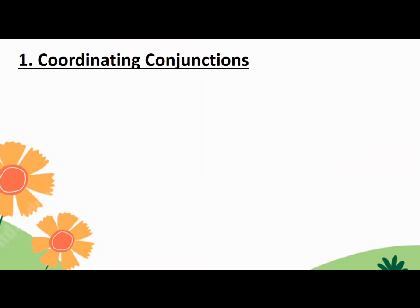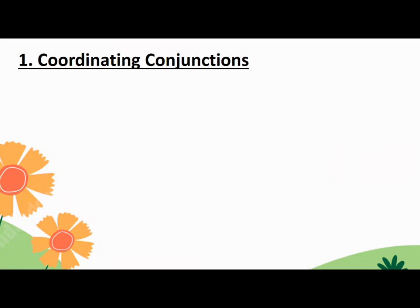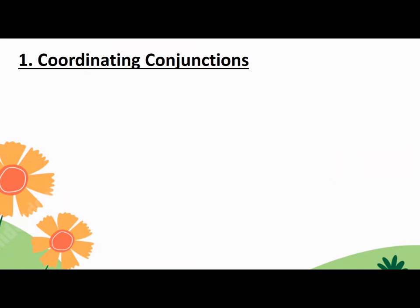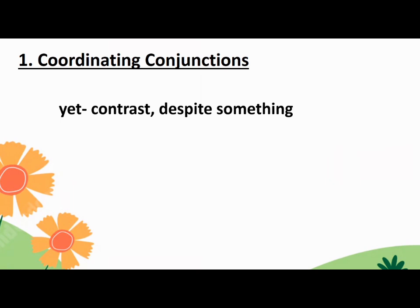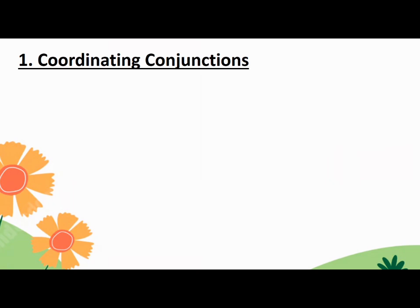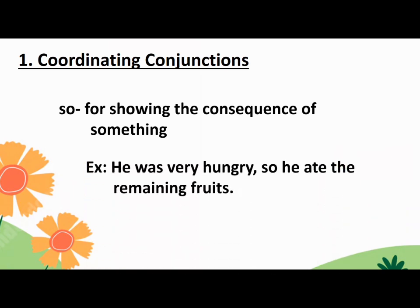The next coordinating conjunction is 'but,' used to show contrast. Example: I eat vegetables but I never eat junk foods. The next is 'or,' used to show an alternative. Example: Would you like bread or cookies with your coffee? Another is 'yet,' used to show contrast, also meaning despite something. Example: He is still young yet he is already very responsible. And the last coordinating conjunction is 'so,' used for showing the consequence of something. Example: He was very hungry so he ate the remaining fruits.